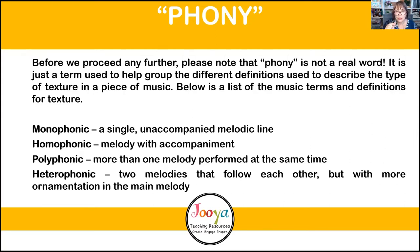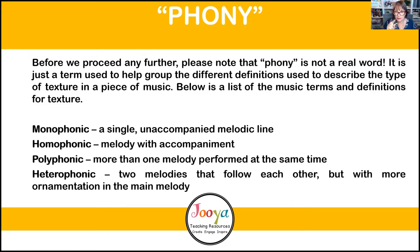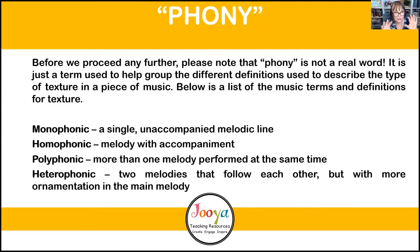Monophonic means a single unaccompanied melody line — if everybody is singing a song like Frère Jacques all at once in unison with no other accompaniment, that's monophonic. If we're singing the same melody but add a guitar, it becomes melody with accompaniment — homophonic — which is most of the music people listen to. Polyphonic is more than one melody happening at the same time, like a round where one group starts and another joins a little after. Heterophonic is two melodies that follow each other but with more ornamentation in the main melody — common in pop music where backing singers sing the melody and the lead vocalist sings fancy ornaments over the top.